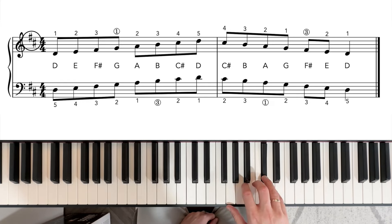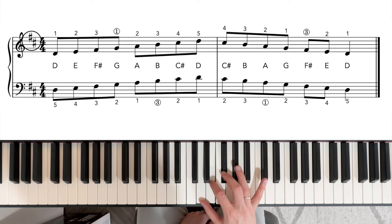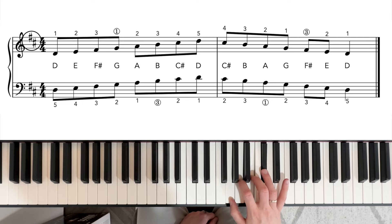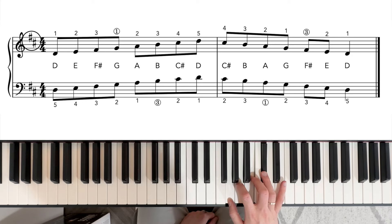2, 3, 4, 5, coming back, 4, 3, 2, 1, crossing over number 3 onto the F sharp, 2, and 1. So we've got two groups, 1, 2, 3, and 1, 2, 3, 4 going up, and 1, 2, 3, 1, 2, 3, 4 coming back.